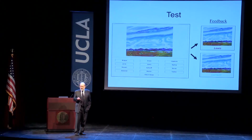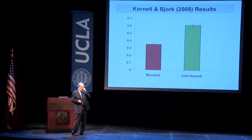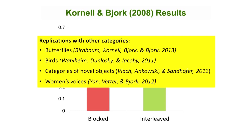We were expecting this is one case where blocking and massing should help — and this is the result we got. Researchers are often not as smart as we think we are. This has now been replicated with many other categories: butterflies, birds, novel objects, women's voices, statistical rules, a whole bunch of things.